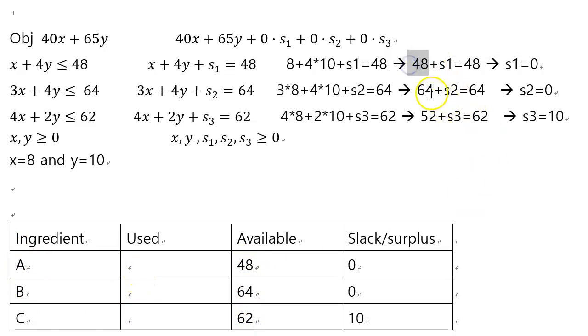Now how much were used? Well, these numbers when you calculate it, basically the numbers you calculate by plugging in 8 and 10 to the left side, are how much was actually used to make them. So you have 48, 64, and then the last one was 52.